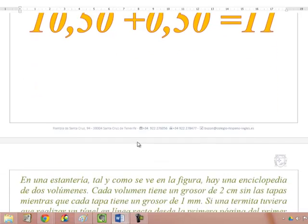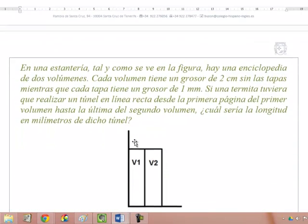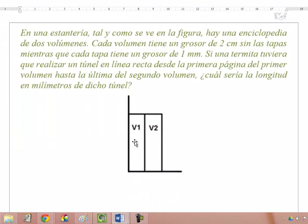El segundo reto me resultó bastante curioso, me costó bastante además, porque dice en una estantería tal y como se ve en la figura, hay una enciclopedia de dos volúmenes, volumen 1 y volumen 2. Cada volumen tiene un grosor de 2 centímetros sin las tapas, mientras que cada tapa tiene un grosor de 1 milímetro.